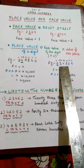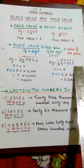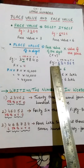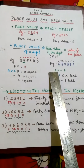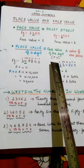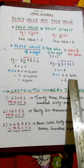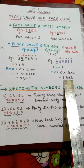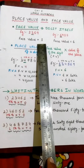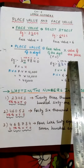Now look at this example: 6,34,569. The underlined digit is 6, and we have to find its place value. The face value of 6 is 6, and it is located in the Lakhs place. So the place value of 6 will be 6 into Lakh, which means 6 Lakh. To summarize: face value is the digit itself, and place value is the face value multiplied by the value of that place.